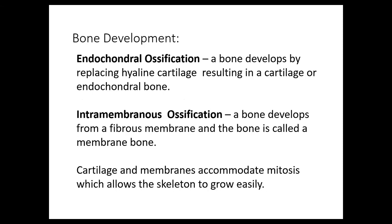Number four asks you to list the two types of ossification and provide a characteristic for each. The first is endochondrial ossification, where bone develops by replacing hyaline cartilage, resulting in an endochondrial bone. The second is intramembranous ossification, where bone develops by fibrous membrane and the bone is called a membrane bone. Cartilage and membranes accommodate mitosis, which allows the skeleton to grow easily. Put a star by these two items and underline hyaline cartilage and endochondrial, and fibrous membrane and intramembranous.